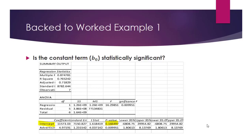Because we are talking about b0, which is the intercept term, we have to look at this row. And because we are testing for statistical significance, we can just look at the p-value. By default, Excel has already conducted this test — whether the population b0 is equal to 0 or not. That is, Excel has already tested for statistical significance of the b coefficients.